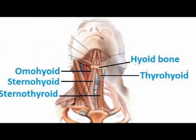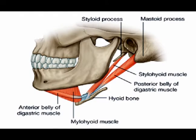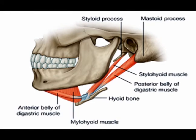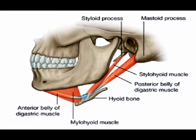The infrahyoid muscles are the sternothyroid, the omohyoid, and the thyrohyoid. The suprahyoid muscles attach the hyoid bone to the mandible, tongue, and skull.